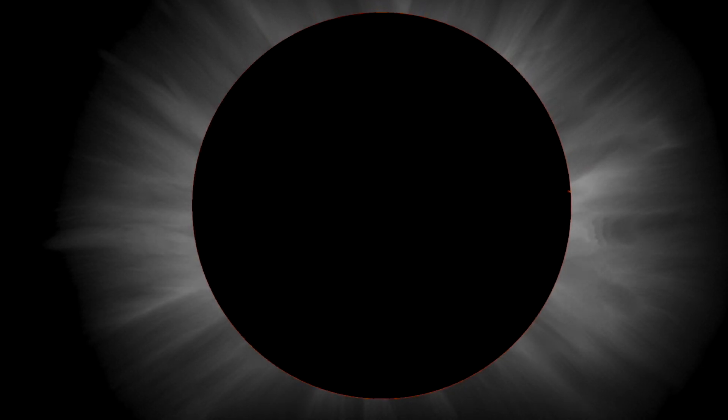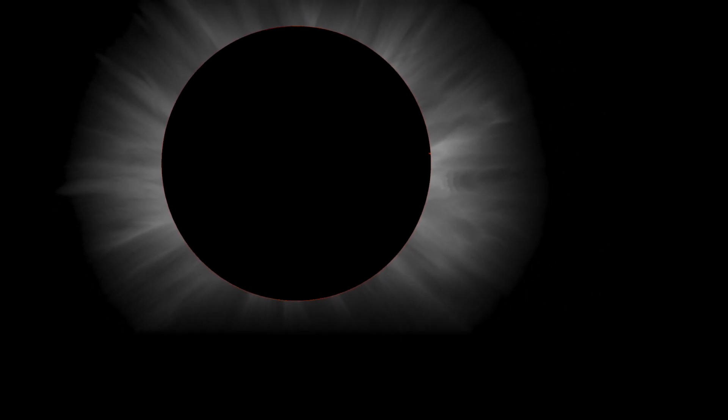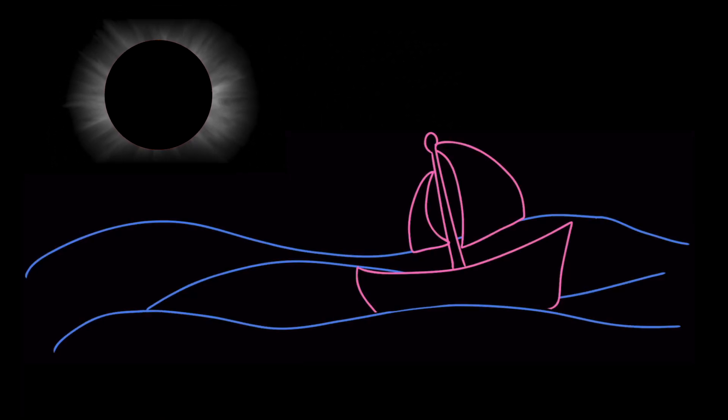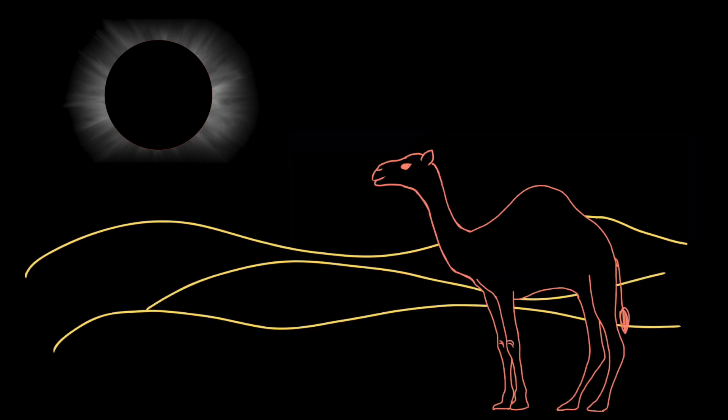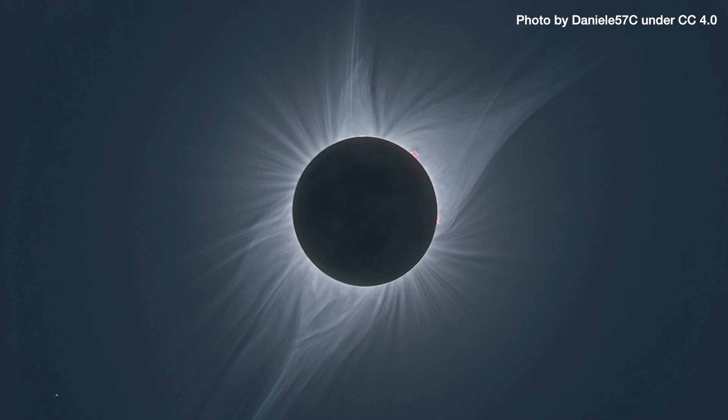Total solar eclipses take place on Earth every 18 months or so, but sometimes they're only visible from the middle of an ocean or a desert. If you're curious about when the next total solar eclipse will happen near you, look it up online. Scientists are able to calculate when solar eclipses will happen centuries in advance, so you can start planning far ahead.